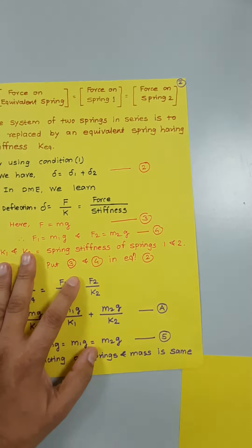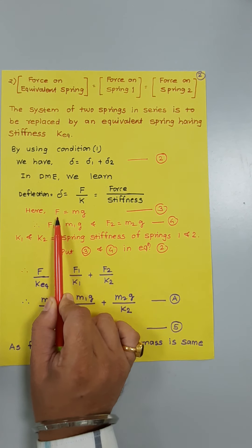Using condition number one: delta = delta one + delta two. From machine elements, deflection delta = F / k, meaning force divided by stiffness. Here F is the load acting on mass m. From Newton's law, F = mg. For spring one, F1 = m1 times g, and F for the equivalent spring is similarly defined.